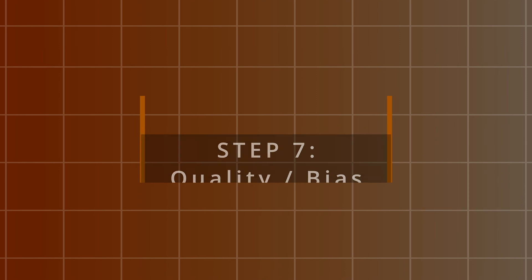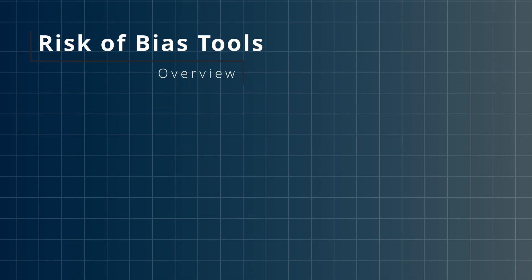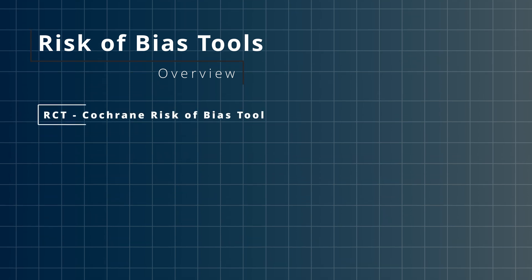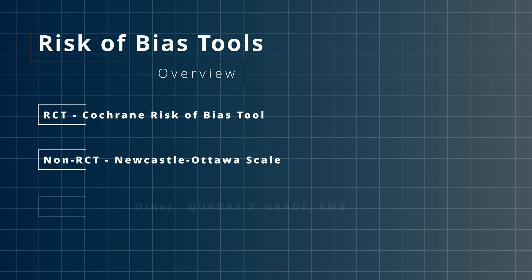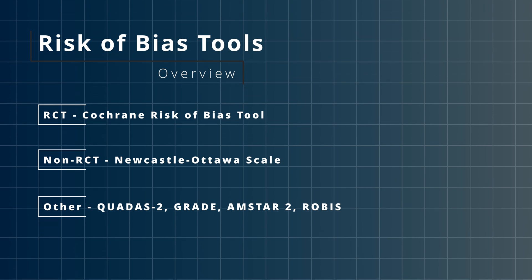An important step you shouldn't skip is assessing the quality of your included studies, highlighting the potential risk of bias that might affect conclusions from your SLR. The tool best suited depends on the type of studies included. If your SLR focuses solely on RCTs, you can use the Cochrane Risk of Bias tool. For non-randomized studies, you could use the Newcastle-Ottawa Scale. Other popular tools include QUADAS-2, GRADE, AMSTAR-2, or ROBIS, all with their dedicated intended purposes.